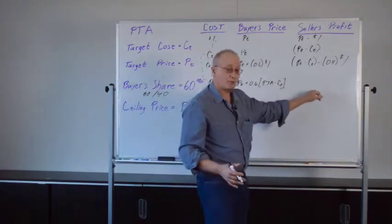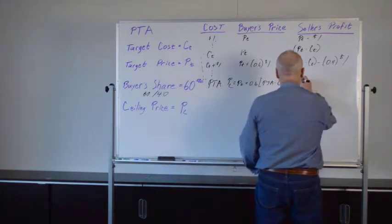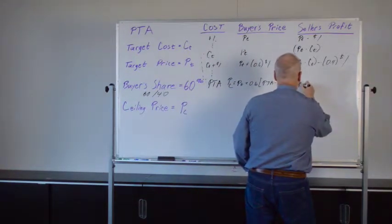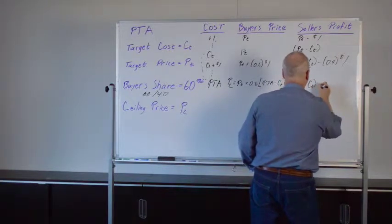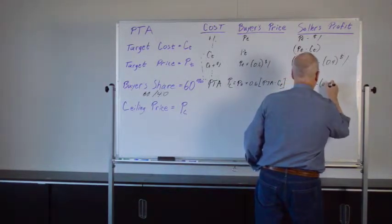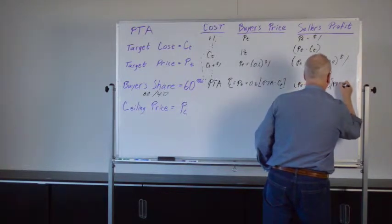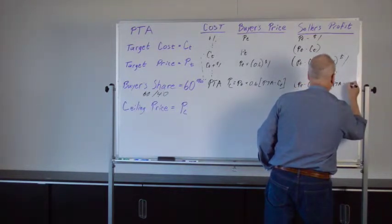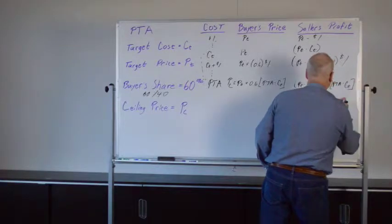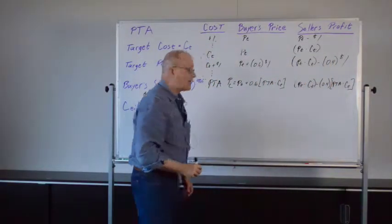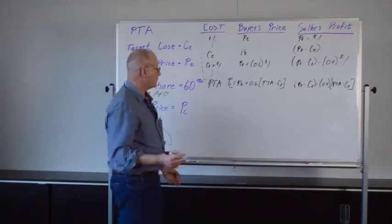And here, the seller's profit is P sub T minus C sub T minus 40% of that cost overrun from the PTA, between the PTA and the C sub T.